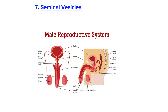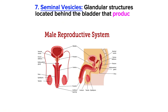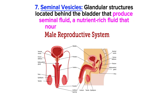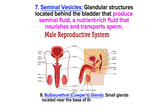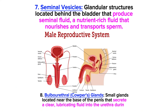Next are the seminal vesicles — glandular structures located behind the bladder that produce seminal fluid, a nutrient-rich fluid that nourishes and transports sperm. Lastly, the bulbourethral glands, or Cowper's glands, are small glands located near the base of the penis that secrete a clear lubricating fluid into the urethra during sexual arousal.